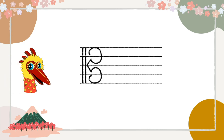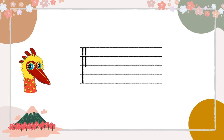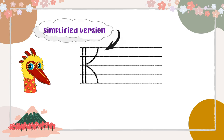The student finds it hard, but don't worry — there's a simple way of drawing the alto clef. First, two straight lines from line 5 all the way down to line 1, same as the previous version. Here's the simplified part: from the inner line intersection with line 3, draw a curve upwards to line 5 and another curve downwards to line 1. There you go — a simplified version of the alto clef!